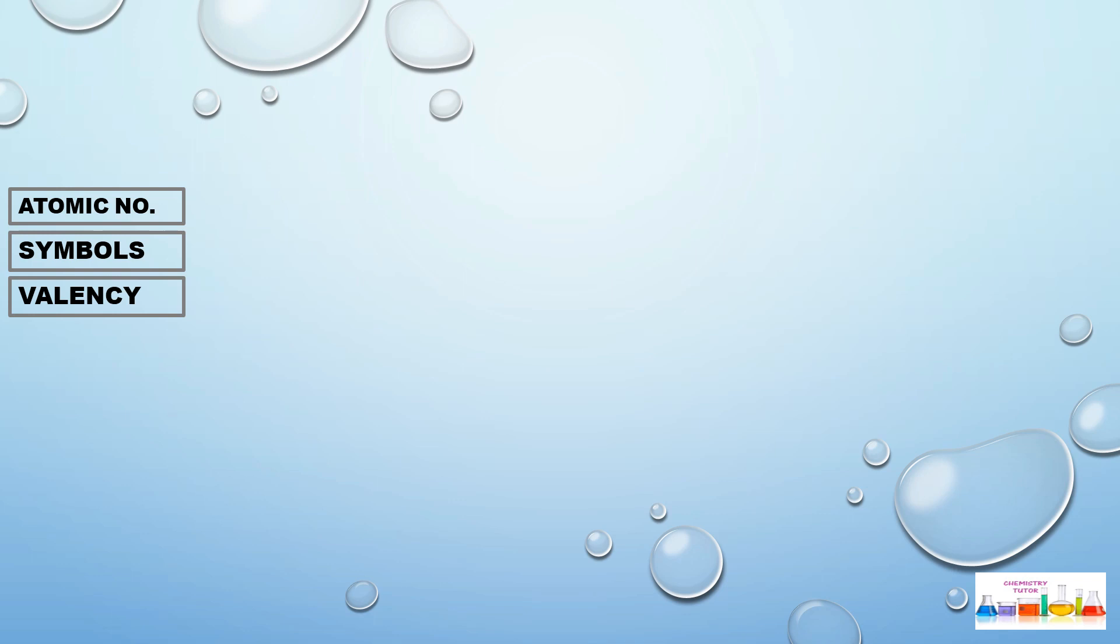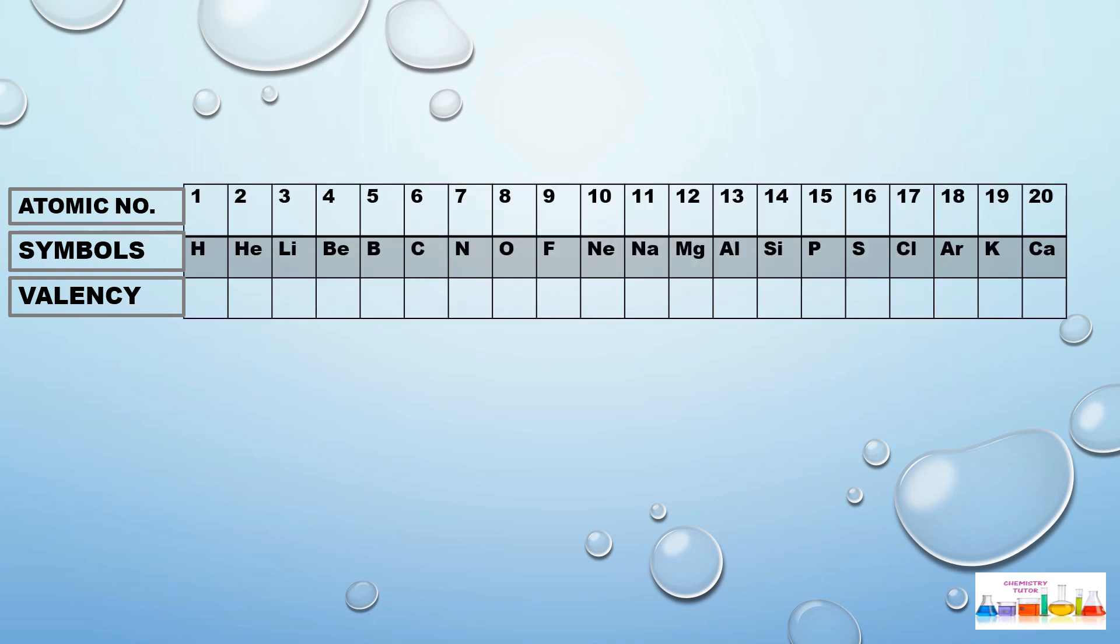With this trick, you should learn the atomic number of the first 20 elements with their symbols. Now what are their valencies? Let's see.